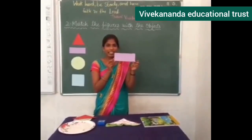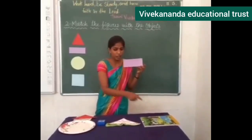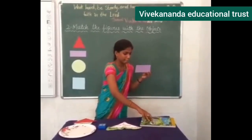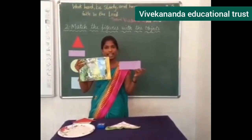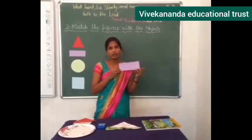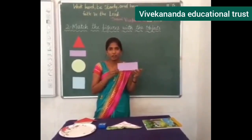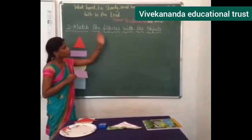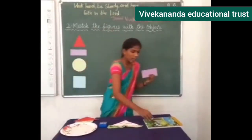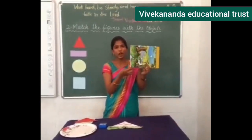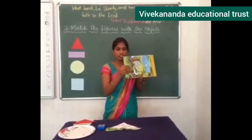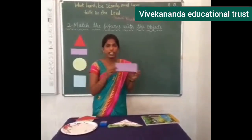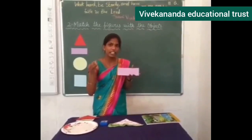This is a rectangle shape. So which of the objects will match to the rectangle? Book — book is in rectangle shape. Then your notebook. You all have a TV at home — look at the TV. What shape is that? Rectangle. The board is also in rectangle shape. Because two sides are long and two sides are short, this is a rectangle. So like this, you have to relate shapes to objects.